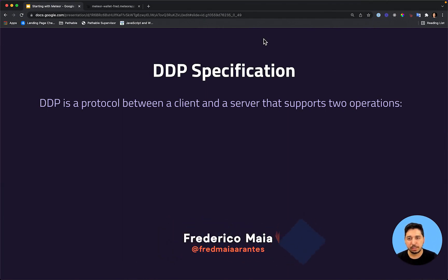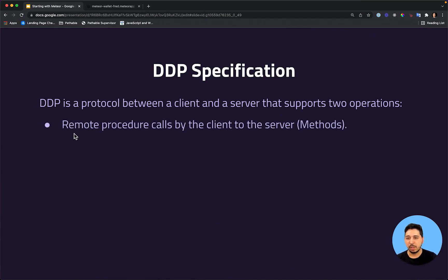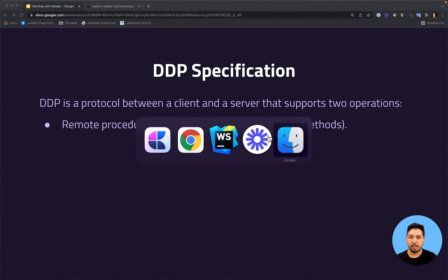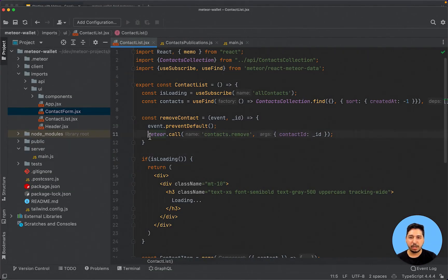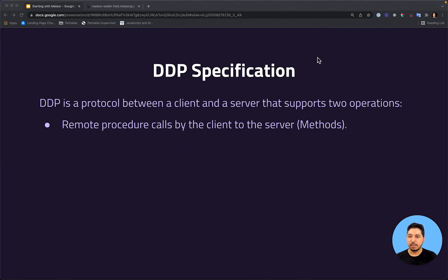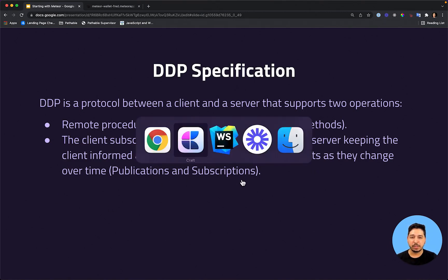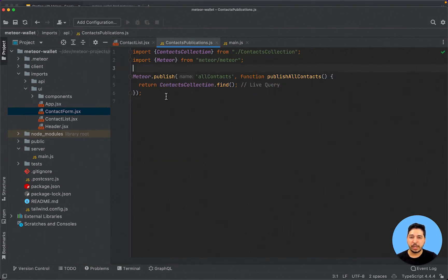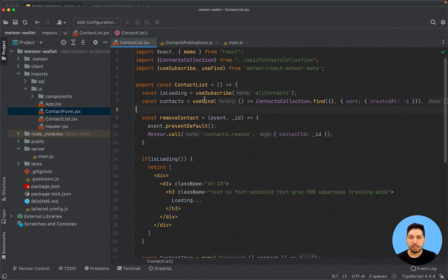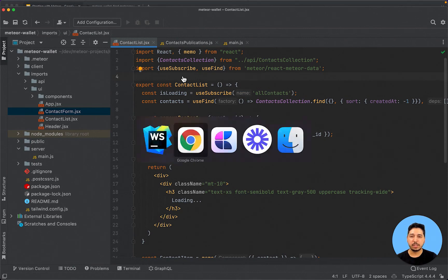The DDP specification is actually simple. DDP is a protocol between a client and a server that supports two operations. One is remote procedure calls by the client to the server — those are our methods. If we go back to our application and see the contact list, we are calling a method from here, and this is one of the operations that DDP specifies. The next one is the client subscribing to a set of documents and the server keeping the client informed about the contents of those documents as they change over time. This is about publications and subscriptions that we just implemented — we created a publication called 'all contacts' and then a subscription on the client side.